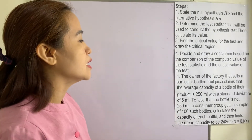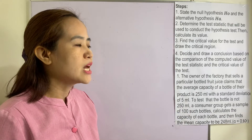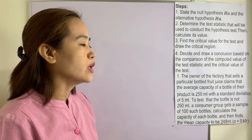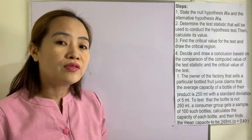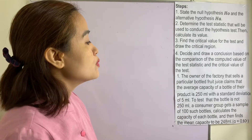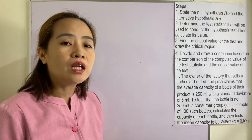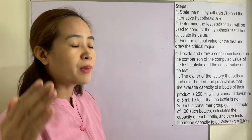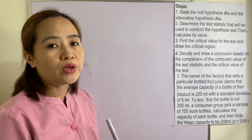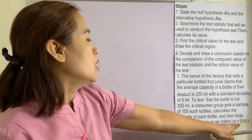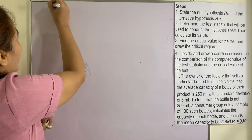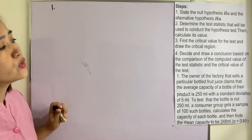Example number one: the owner of a factory that sells a particular bottled fruit juice claims that the average capacity of a bottle of their product is 250 ml with a standard deviation of 5 ml. To test that the bottle is not 250 ml, a consumer group gets a sample of 100 such bottles, calculates the capacity of each bottle, and finds the mean capacity to be 248 ml. Use 0.10 as the level of significance.